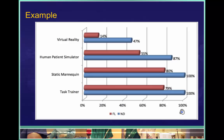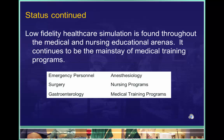The information on this graph provides a good example of where Low Fidelity Simulation lies in relation to full human patient simulation. The people who published this graph were comparing medical educational institutions in North Dakota to those in Florida. The North Dakota publishers noted that 100% of their medical and educational organizations have task trainers and static manikins, 87% have human patient simulators, and 47% have virtual reality simulators. This shows that Low Fidelity Simulation is found in 100% of educational institutions studied.